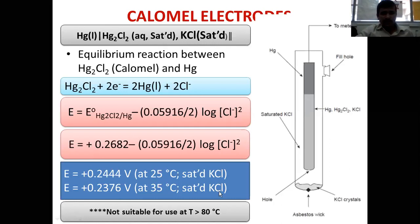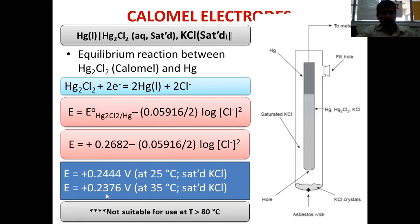Using saturated KCl at 35°C, the E value becomes +0.2376 V. So the value of E anode decreases when the temperature is increased. This is because increasing temperature increases the chloride ion concentration in the saturated solution. As chloride ion concentration increases, the log term becomes higher, and since it is subtracted, the E value becomes lower.